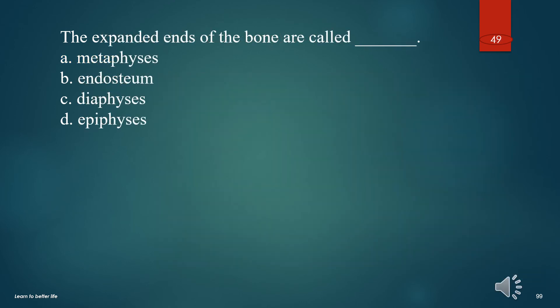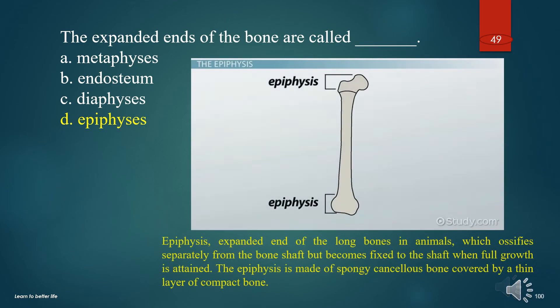The expanded ends of the bone are called what? A. Metaphysis. B. Endosteum. C. Diaphysis. D. Epiphysis. The answer is D. Epiphysis. The epiphysis is the expanded end of the long bones, which ossifies separately from the bone shaft but becomes fixed to the shaft when full growth is attained. The epiphysis is made of spongy cancellous bone covered by a thin layer of compact bone.